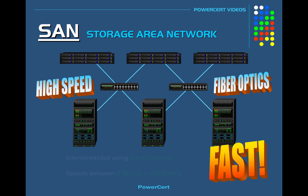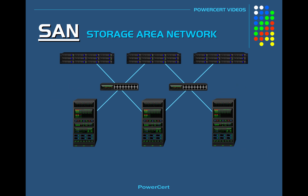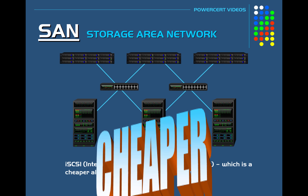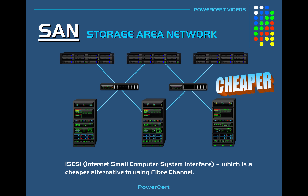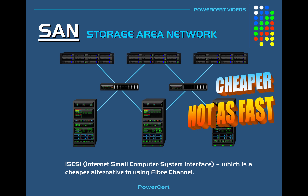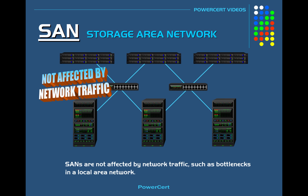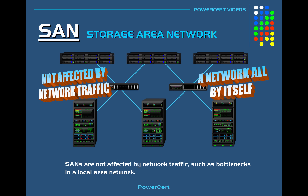Most SANs today use Fiber Channel. But as an alternative, some SANs use iSCSI instead, which is a cheaper alternative to Fiber Channel, but it's also not as fast. One of the main reasons for using a SAN is that SANs are not affected by network traffic, such as bottlenecks that can happen in a local area network. This is because SANs aren't really part of a local area network — SANs are partitioned off; it's basically a network all by itself.